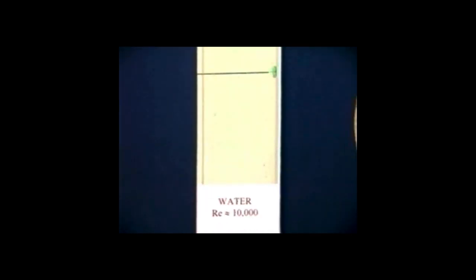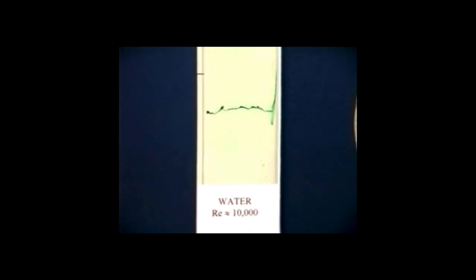Now we look at a Reynolds number of 10,000 — a turbulent case with water — dropping the timeline again. We see a turbulent flow where there's very little variation along the centerline. Near the middle of the flow it's quite flat and blunt for that relatively high Reynolds number. This really validates using something like the power law.